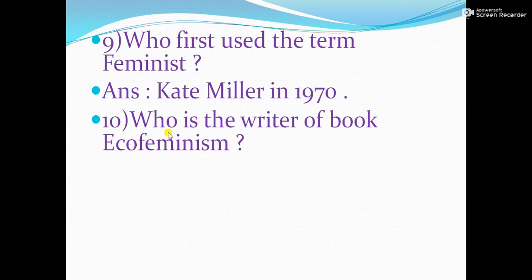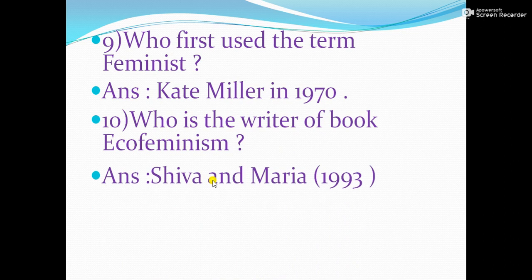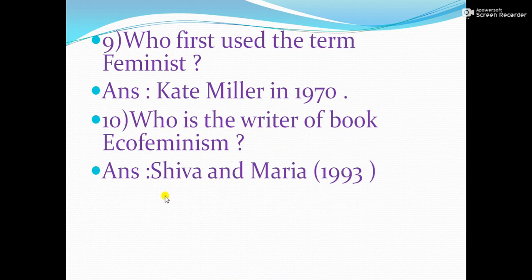Next question: who is the writer of book Ecofeminism? The writer was Shiva and Maria, and this book was written in 1993.